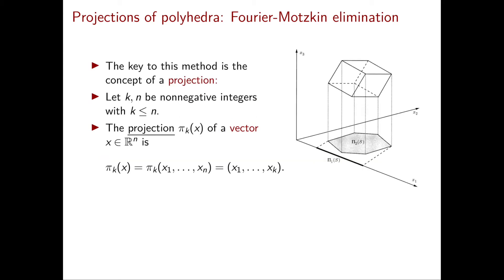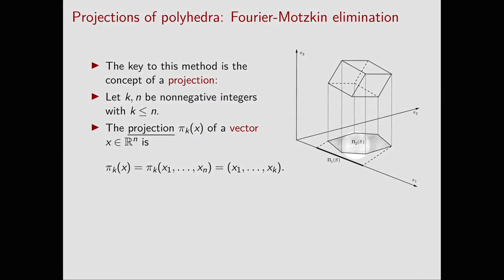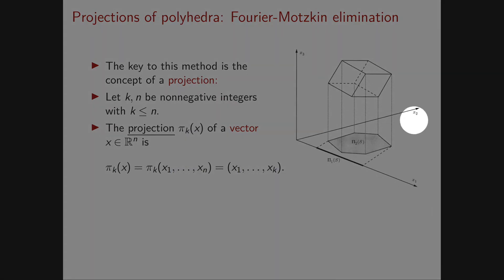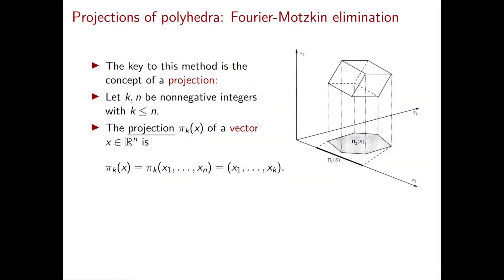The first thing that we need to discuss is the concept of a projection. In low dimension, the concept of projection is very intuitive because essentially it resembles the shadow of an object. For example, here we have a tilted cube in R3 and its projection in its first two components, x1 and x2, is its shadow onto the x1, x2 plane. So let's now formally define the concept of a projection.